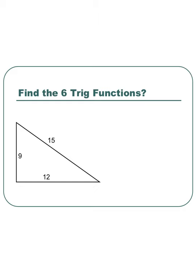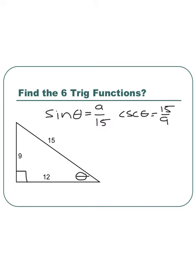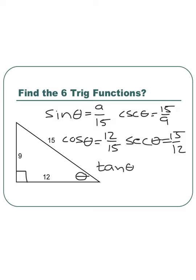We're going to find the trig functions for our triangle. This is a right triangle, and our reference angle is at the bottom right. The sine is the opposite side over the hypotenuse, so it's 9 over 15, and the cosecant, being the reciprocal, is 15 over 9. For the cosine, we use the adjacent side: 12 over 15, so the secant is 15 over 12. For the tangent, it's the opposite over the adjacent, which is 9 over 12, so the cotangent is 12 over 9.